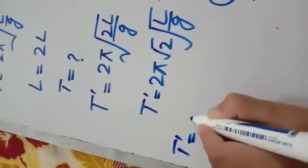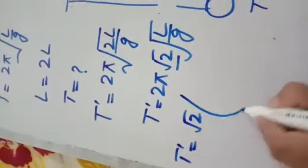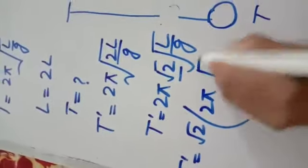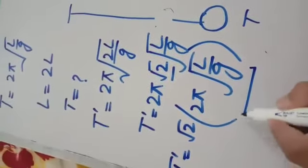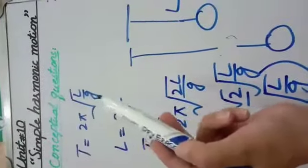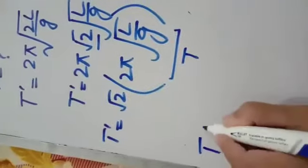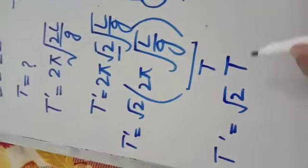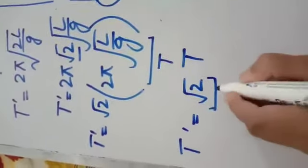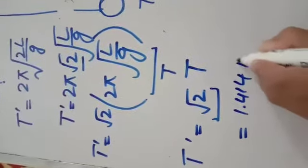This is equal to √2 times the time period of simple pendulum, which we can write as √2T, which is equal to 1.414T.